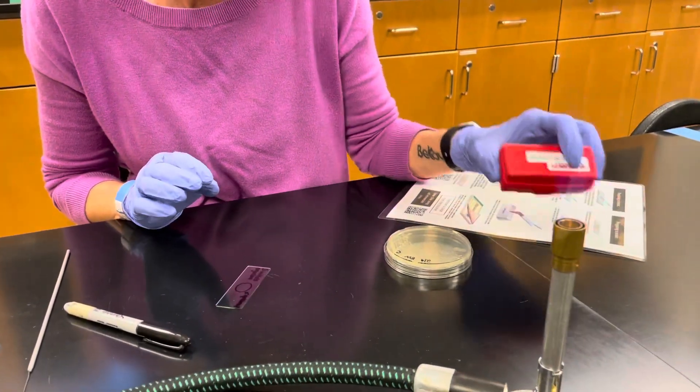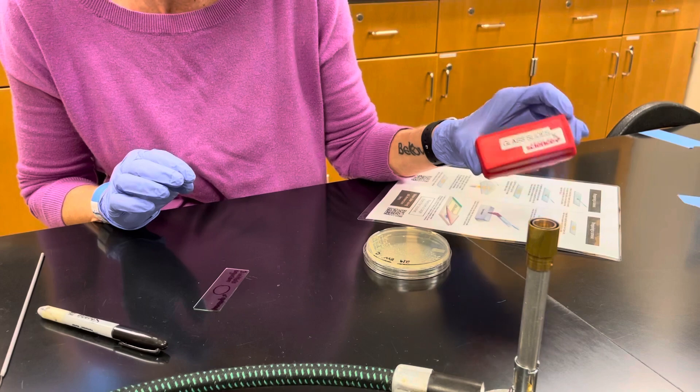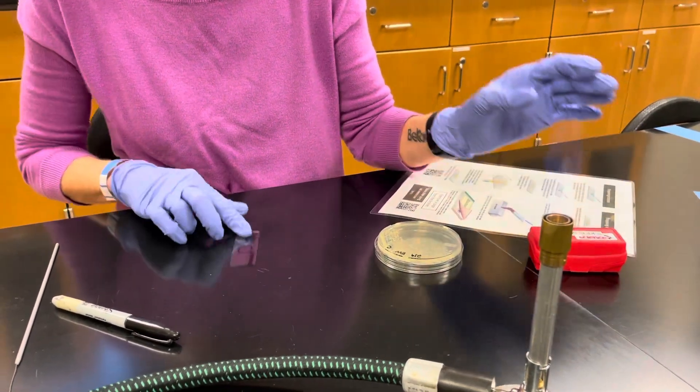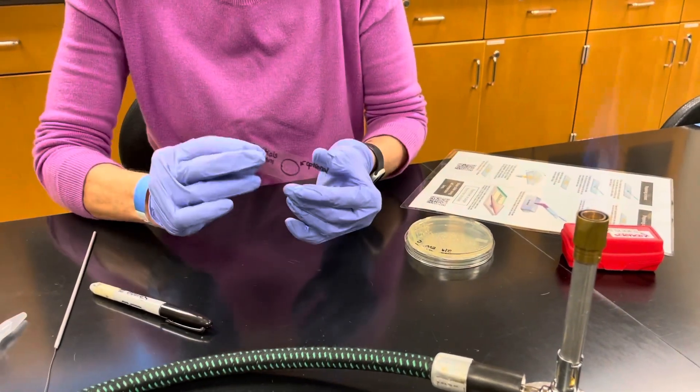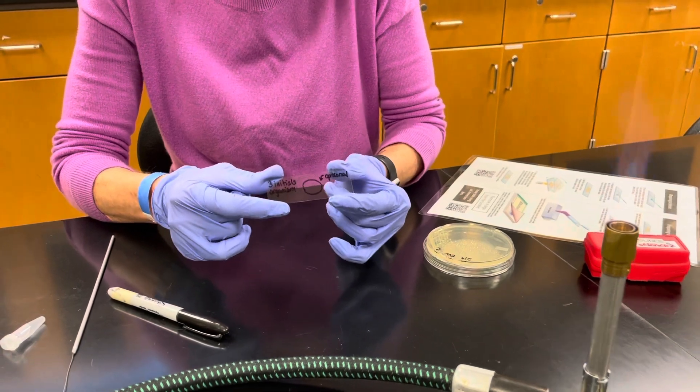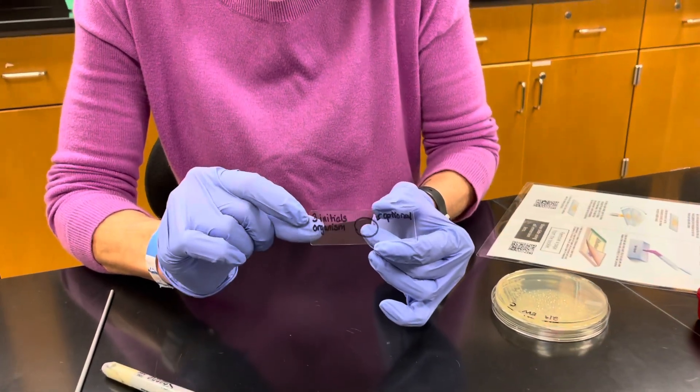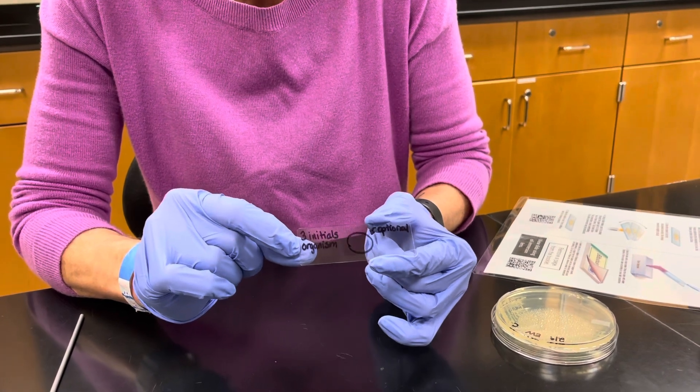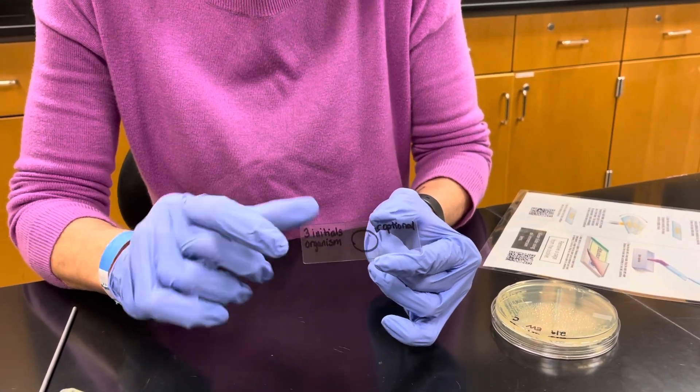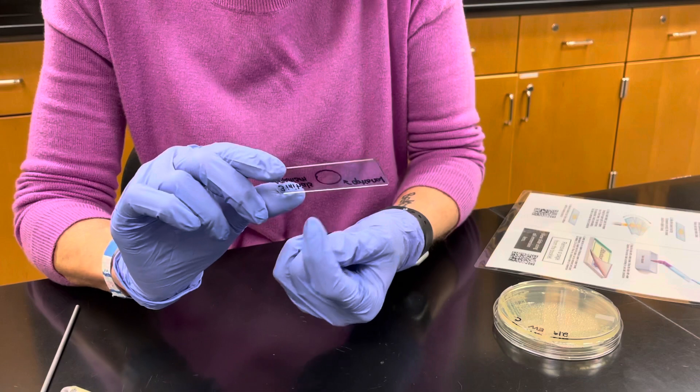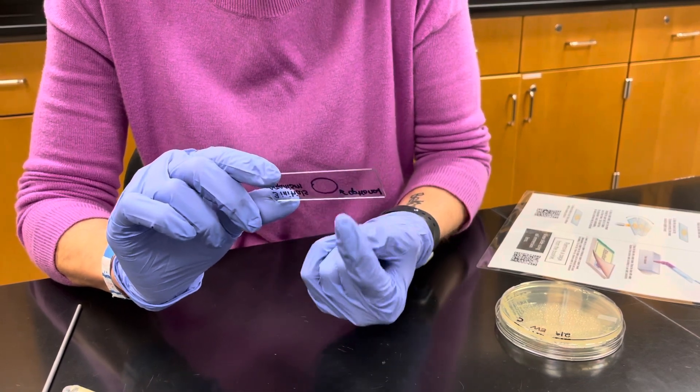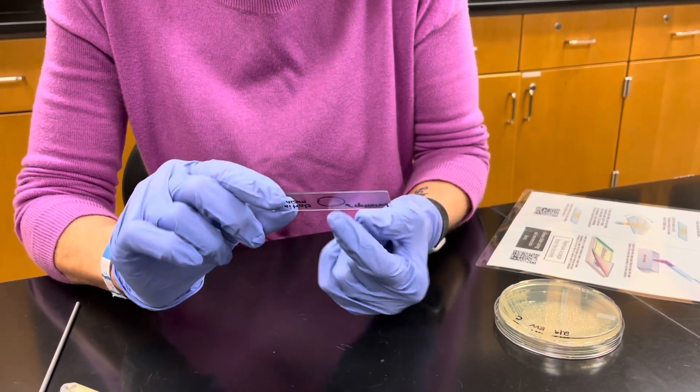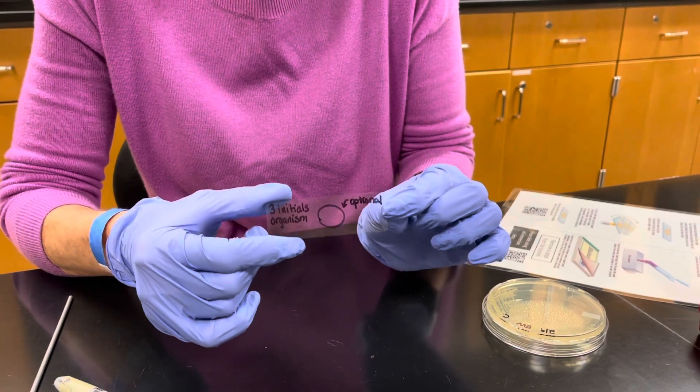First thing you need is a clean glass slide. You should have one in your slide box. You need to label your glass slide. Whenever you're doing staining on the left-hand side of the slide, you want to put your three initials, the name of your organism or the letter of the plate that you're taking your specimen from, and then if you want, you can put a small one centimeter circle on the back of the slide just to help you find where your smear is located.